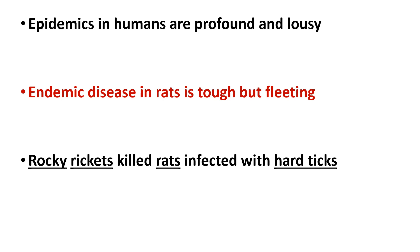Let's go through these mnemonics once more. For epidemic typhus, the mnemonic is 'Epidemics in humans are profound and lousy' — reservoir is humans, causative organism is Rickettsia prowazekii, vector is body louse. For endemic typhus: 'Endemic disease in rats is tough and fleeting' — reservoir is rats, caused by Rickettsia typhi, vector is rat flea.